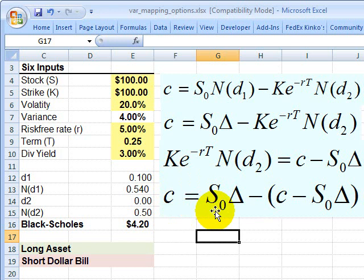The call option is equal to delta number of shares minus here, this quantity in parentheses, which we've already said is how much we are borrowing or we are short the U.S. dollar bill. And this is, at least in this approach, Jorion's approach to mapping the nonlinear derivative that is a European call option.